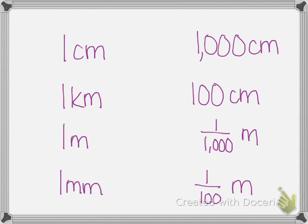Number three says draw lines to match each measurement with its equivalent. So again, if you are having any help, you can look at the back of your book on page 328 to help you with your conversions. So the first one, 1 centimeter. The second one is 1 kilometer. The third one is 1 meter. And the fourth one is 1 millimeter.